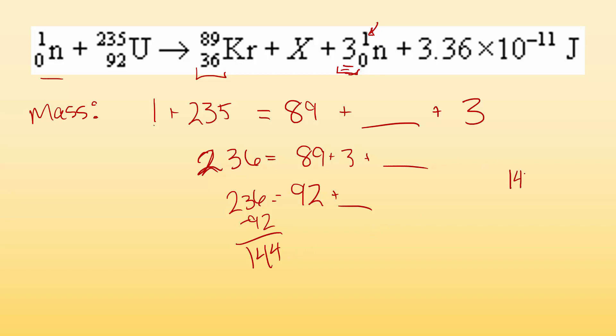And for this charge, I do the same process. Charge, I got zero from that neutron, plus 92 from the uranium right here, equals 36 from the krypton. This is an equal sign. 0 and 92 have to equal 36 and some number, and 3 times 0 is 0.